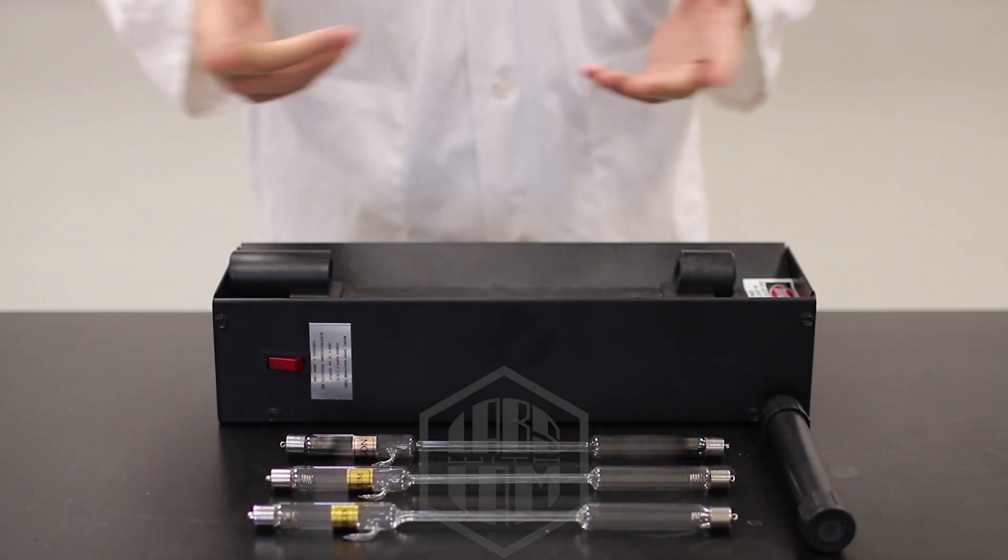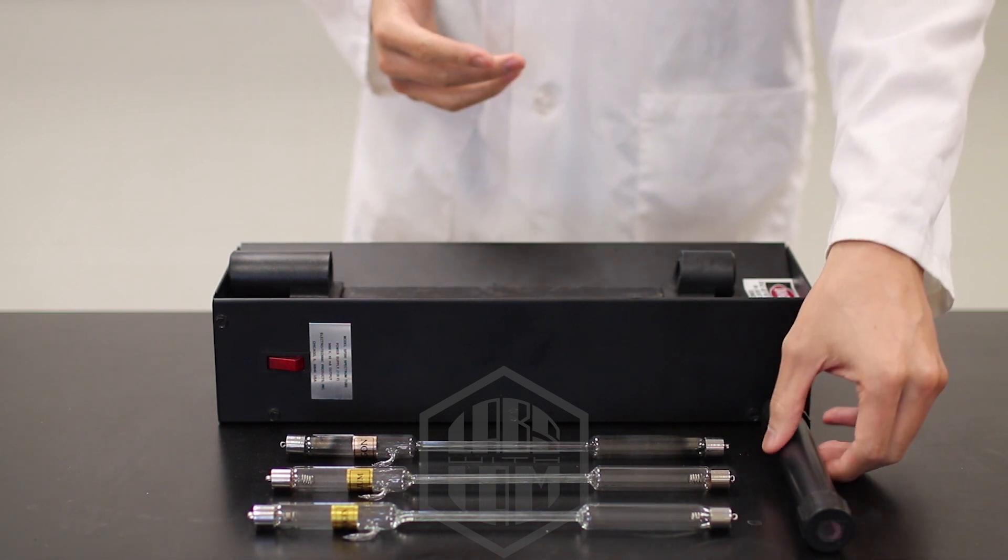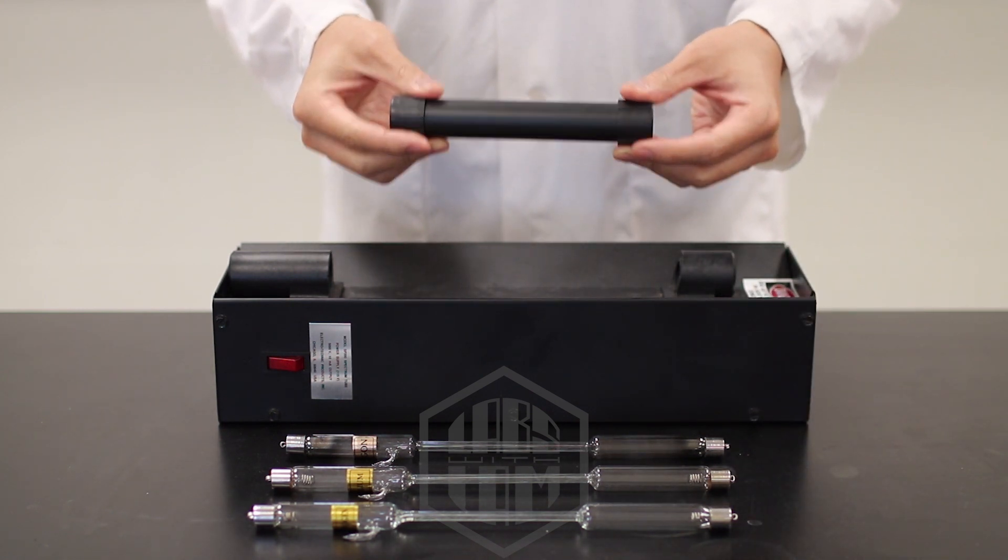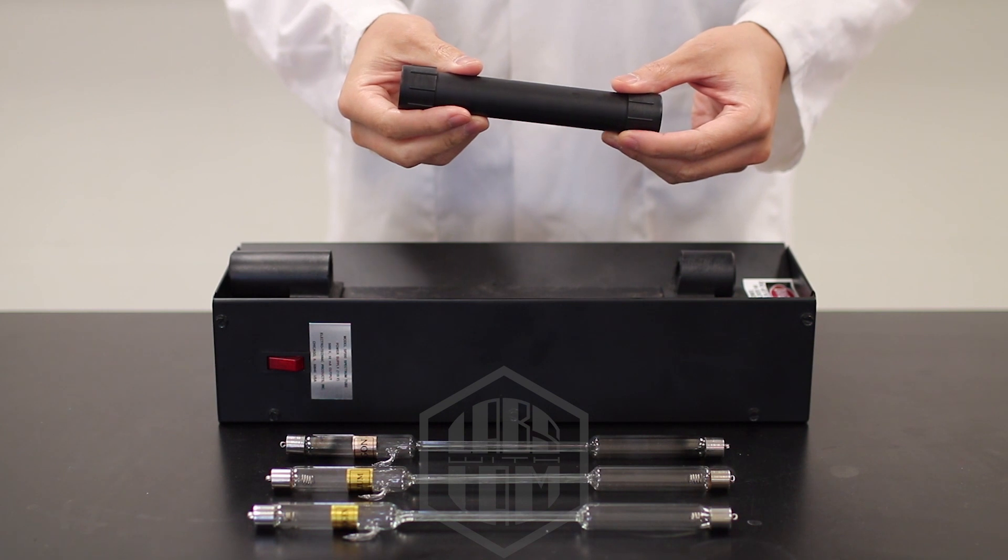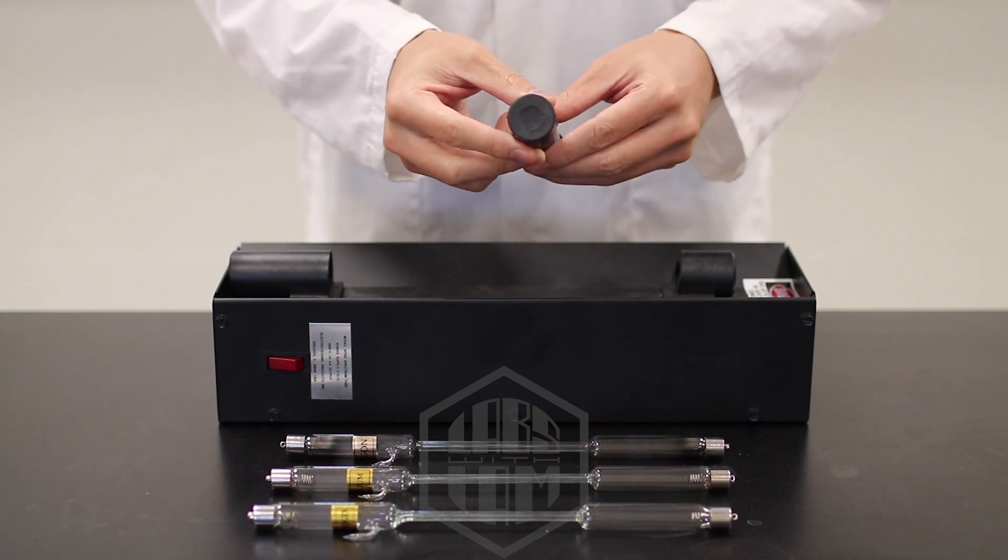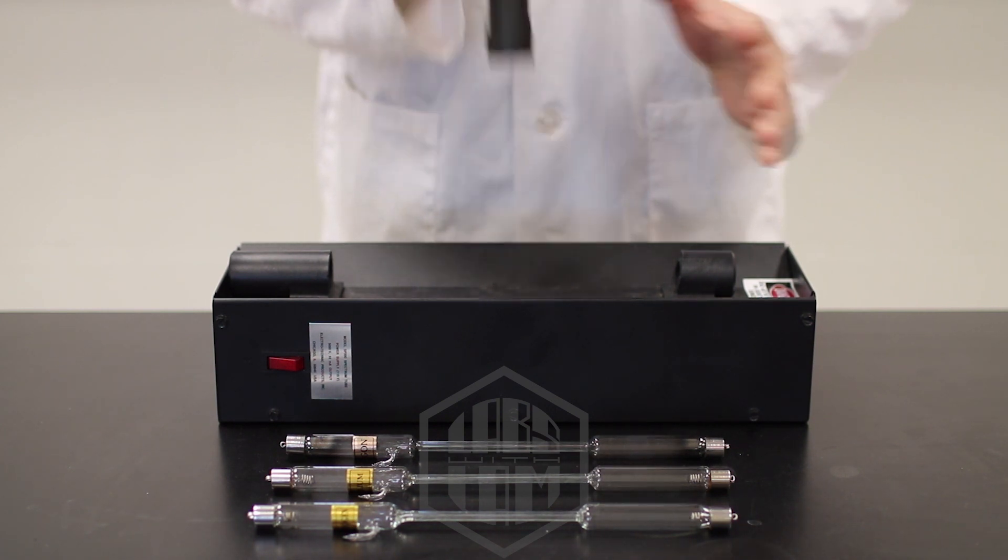First off, let's introduce the tools we're going to be using today. This fancy contraption here is called a spectral viewer. You'll notice that on one end, there's a hole with a lens in it. That's the end that you're going to be looking through.